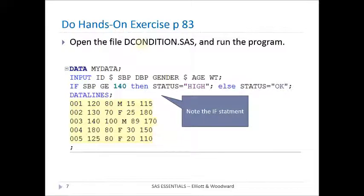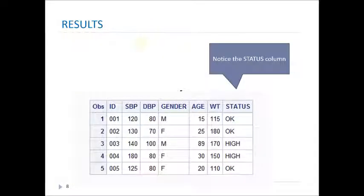Now when we run that, you should get this answer here, where we see a table that has a new column called status. This column was not in the original data set, and it's set either to the value OK or high, depending on the value of systolic blood pressure.